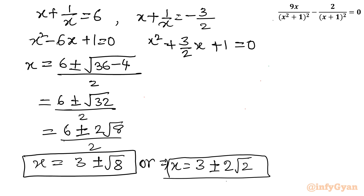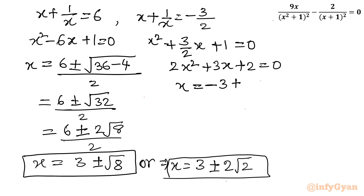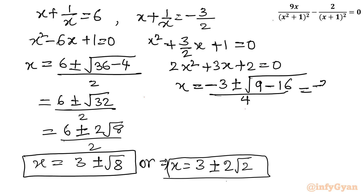Now for the second equation x + 1/x = −3/2. Multiplying through by x gives x² + 3/2 x + 1 = 0. Multiplying by 2: 2x² + 3x + 2 = 0. Applying the quadratic formula (Sridharacharya formula): x = (−3 ± √(9 − 16)) / 4 = (−3 ± i√7) / 4. These are two imaginary solutions.